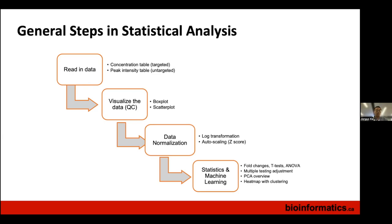Quality checking requires statistical understanding, knowledge of your experimental design, and which instrument was used. If you used QC samples, that's relevant here. Next is data normalization — a procedure to improve data. Most metabolomics data generated at a center like TMIC is high quality; you just need to make it more compatible, like fitting a normal distribution. In some cases, if data quality is poor, you need batch correction and missing value imputation. Finally, once data is clean and normalized, we apply machine learning and classification.